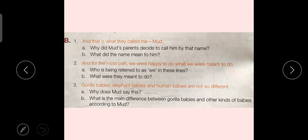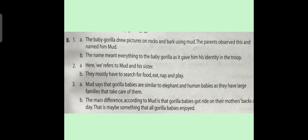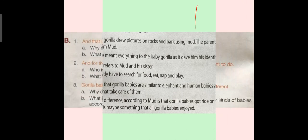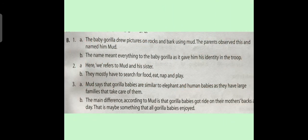Now we will do Exercise B. Sentence No. 1: "And that is what they called me — Mud." Question A: Why did Mud's parents decide to call him by that name? Answer: The baby gorilla drew pictures on rocks and bark using mud. The parents observed this and named him Mud. Question B: What did the name mean to him? Answer: The name meant everything to the baby gorilla as it gave him his identity in the troop.